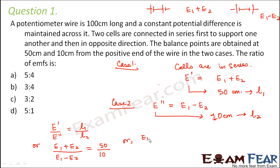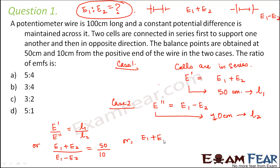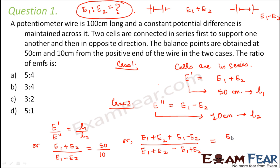We need to find E1 : E2. We use the concept of componendo and dividendo, where numerator plus denominator divided by numerator minus denominator is applied to both sides. On the left we get 2E1 / 2E2, and on the right we get (50 + 10) / (50 − 10) = 60 / 40.